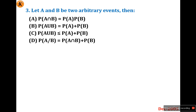Let A and B be two arbitrary events. Then: probability of A intersection B equals probability of A times probability of B; probability of A union B equals probability of A plus probability of B; probability of A union B is less than or equal to probability of A plus probability of B. The first three options are all standard formulas and theorems, but the last one is false.